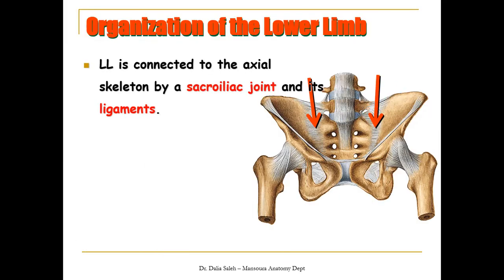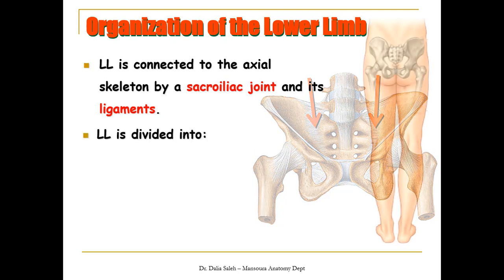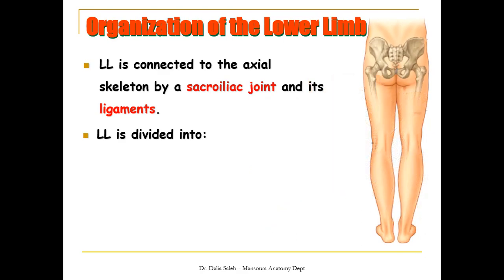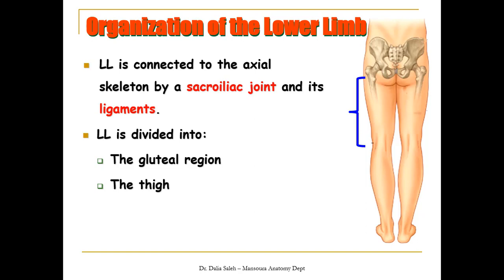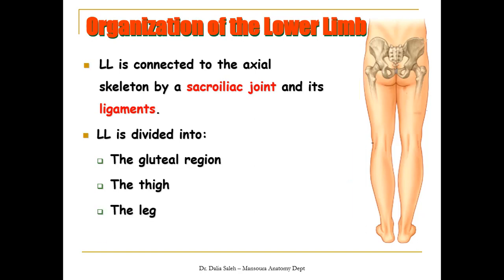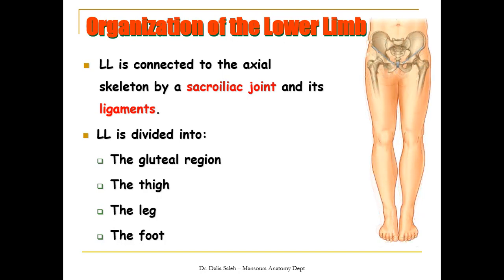The lower limbs are connected to the axial skeleton by the sacroiliac joints and their powerful ligaments. If you see the lower limb from the back, it is divided into the gluteal region, the thigh, the leg, and the foot. If you look at the lower limb from the front, you're going to only see the thigh, the leg, and the foot.